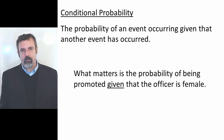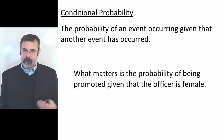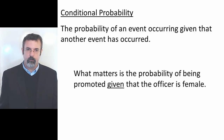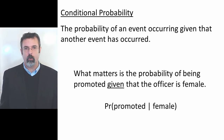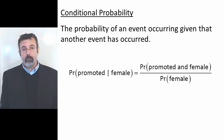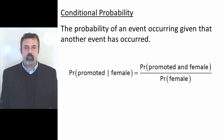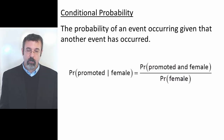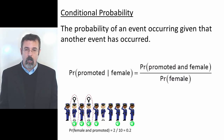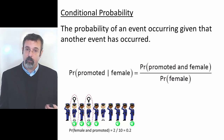In our example, what matters is not the probability of being female and promoted, but rather the probability of being promoted given that you are female. The probability of being promoted given that you are female is the probability of being promoted and female divided by the probability of being female. In our example, two of the officers were both female and promoted, so the probability of being promoted and female is 20%.